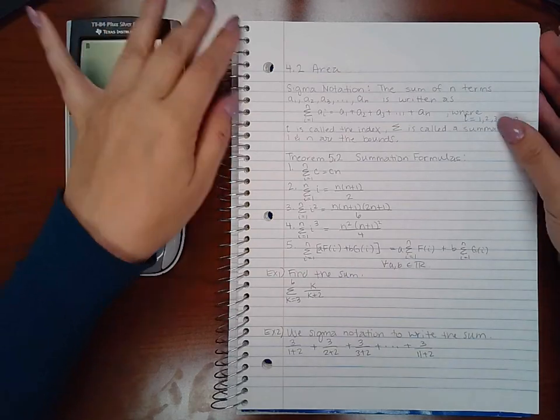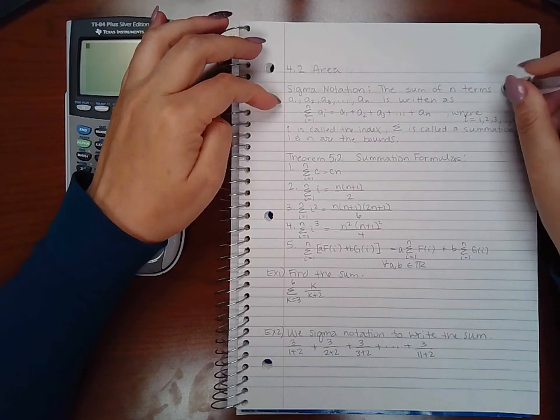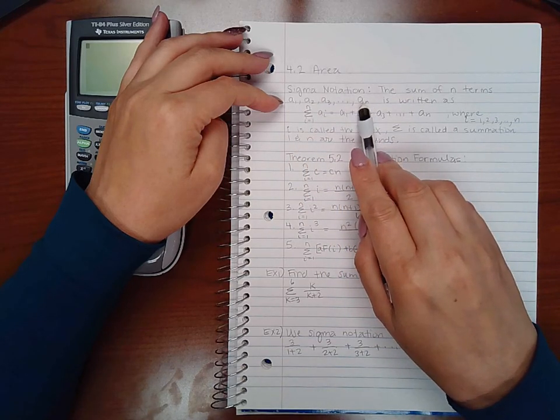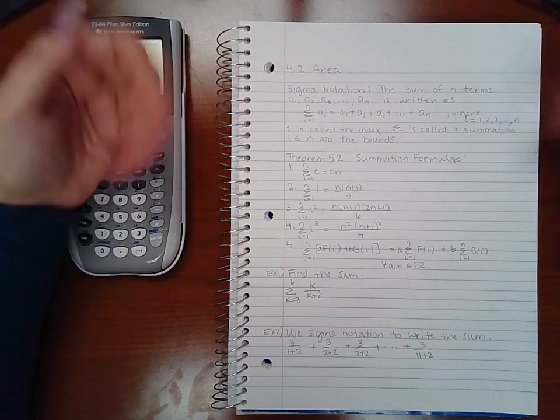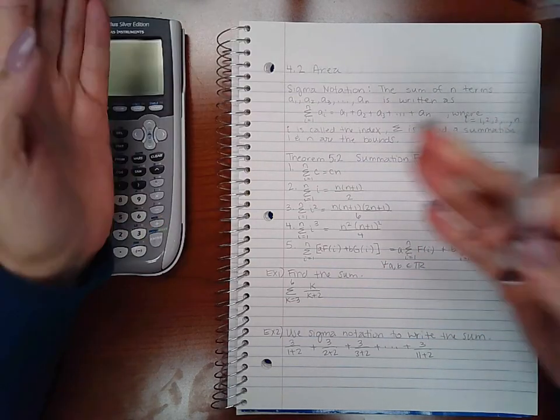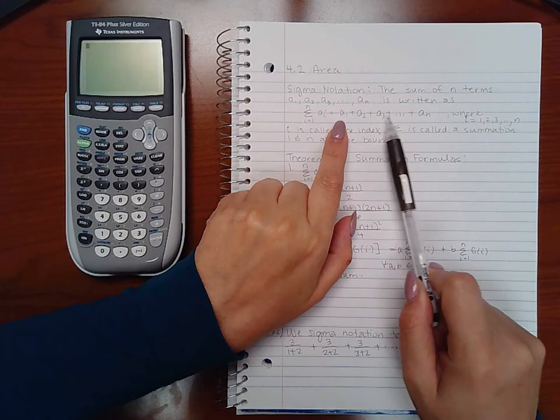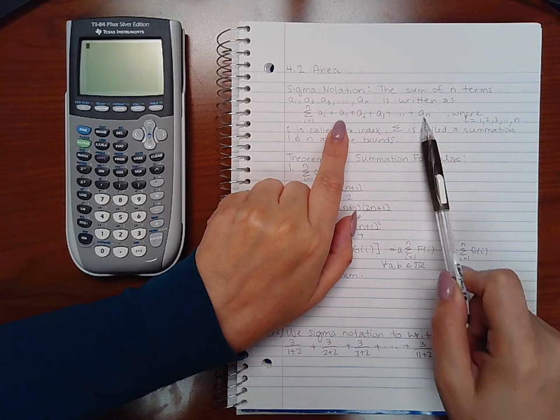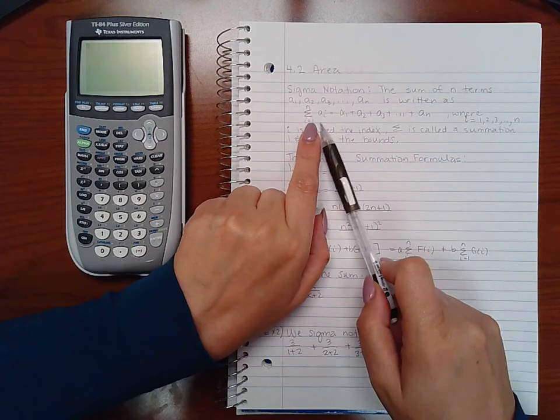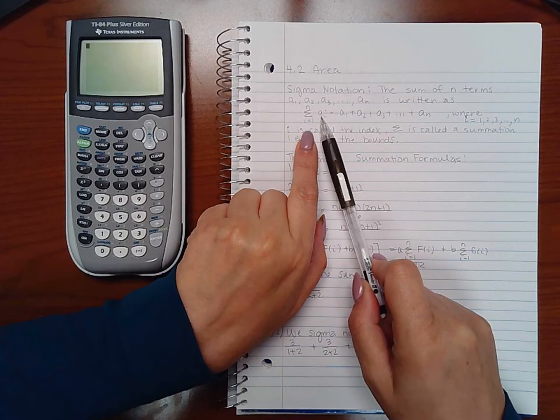So the first thing we're going to talk about is sigma notation. Sigma notation is the sum of an n number of terms: one term, second term, third term, all the way to the nth term. So if n is 10, then you've got 10 terms; if n is 100, you've got a hundred terms, and so on and so forth. This is just the notation to represent each individual term. Instead of writing the first term plus the second term plus the third term all the way to whatever this term is, they're not going to sit here and write all 100 terms out with plus signs in between them. So there's a shorter way to write it using what's called sigma notation.